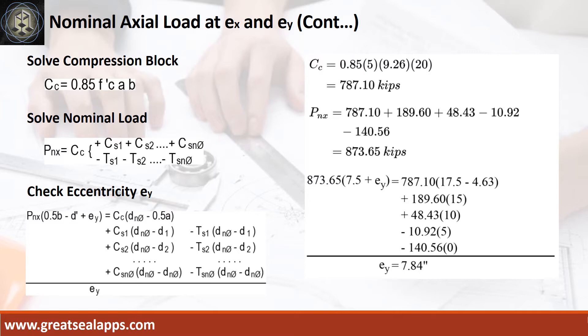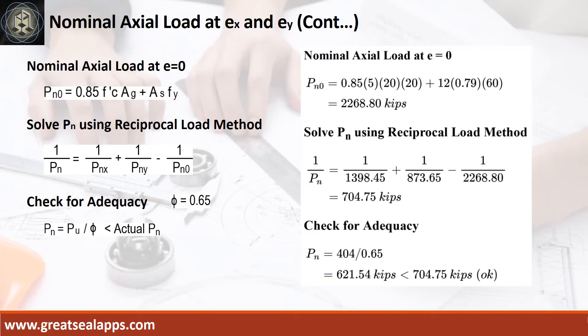Follow the computations for final check of eccentricity at EY equals 7.84 inches. The nominal axial load at E equals 0 is 2,268.8 kips. By using the reciprocal load method, the nominal load is 704.75 kips. Check for adequacy: the nominal design axial load of 621.54 kips is less than the actual axial load capacity of 704.75 kips.